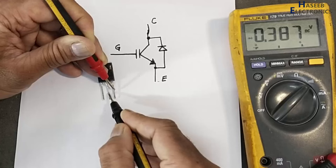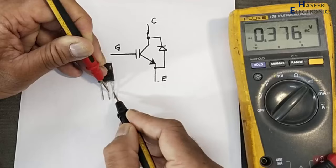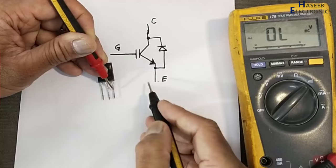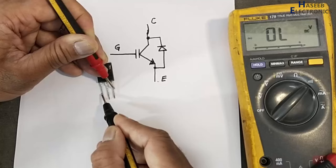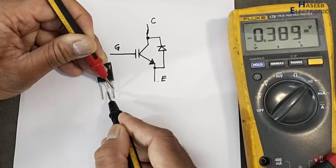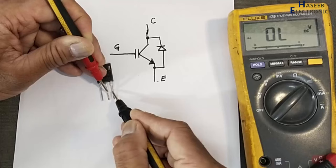This is one condition. This is second condition from here to here. Now red lead at emitter, we will discharge the gate now. Black lead to gate, now return back to collector—0.389. Swap the leads between emitter and collector. Now it is open, so it is good IGBT.